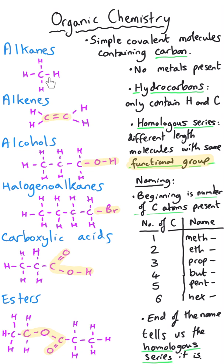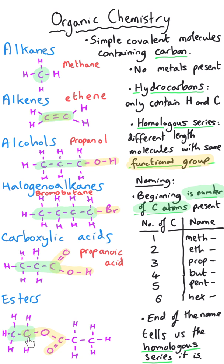The second part of the name tells us what type of homologous series we're concerned with. So this molecule at the top is methane, and this is eth for two, ene for the alkene. And then we've got propanol, and we've got bromobutane because that's a chain of four. And then we've got a chain of three, so propanoic acid. And then we've got two, so this is ethyl-propanoate.